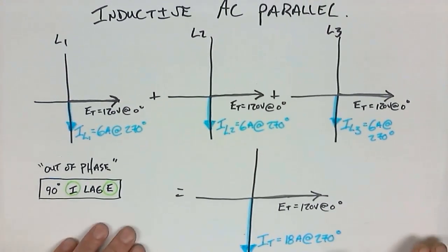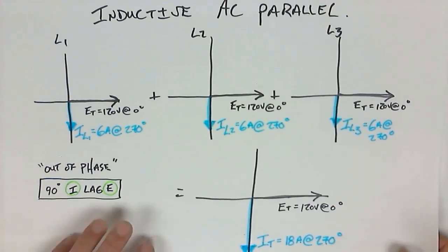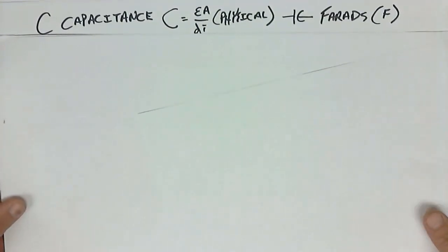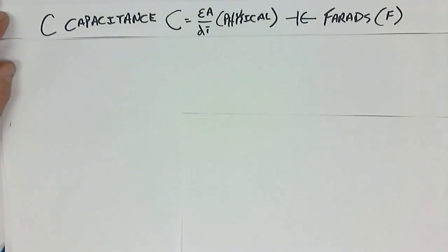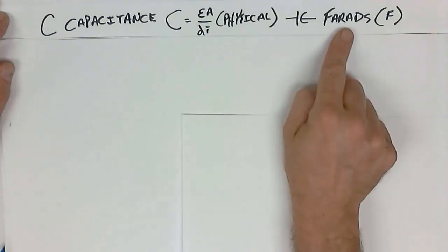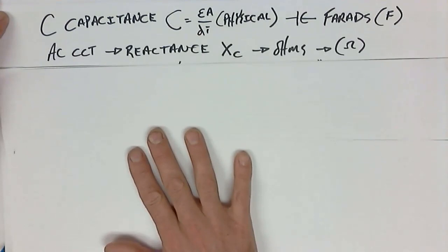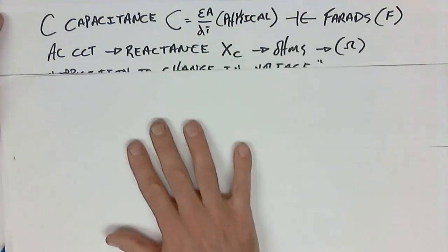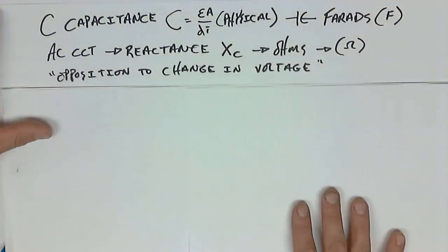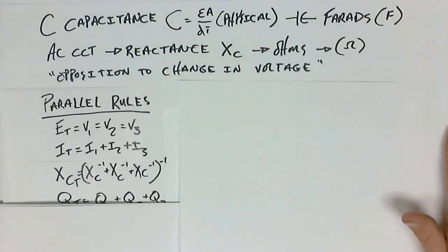Let's look at the next item in an RLC circuit — the last component, which is capacitance. C capacitance equals EA over DI, which is plate area divided by dielectric distance, measured in farads. In an AC circuit it reacts differently, so we record that with XC in ohms — opposition to a change in voltage. Looking at parallel rules, they are yet again the same.